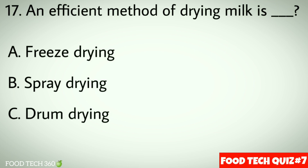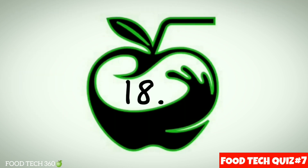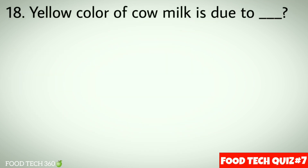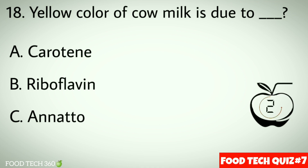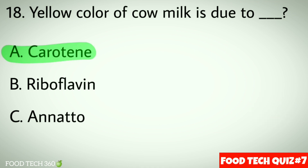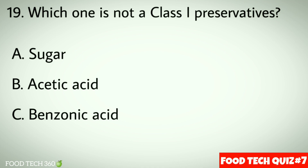Question number 17: An efficient method of drying milk is — options: a) Freeze drying, b) Spray drying, c) Drum drying. Correct answer: b) Spray drying. Question number 18: The yellow color of cow milk is due to — options: a) Carotene, b) Riboflavin, c) Annatto. Correct answer: a) Carotene. Question number 19: Which one is known as a Class 1 preservative? Options: a) Sugar, b) Acetic acid, c) Benzoic acid.